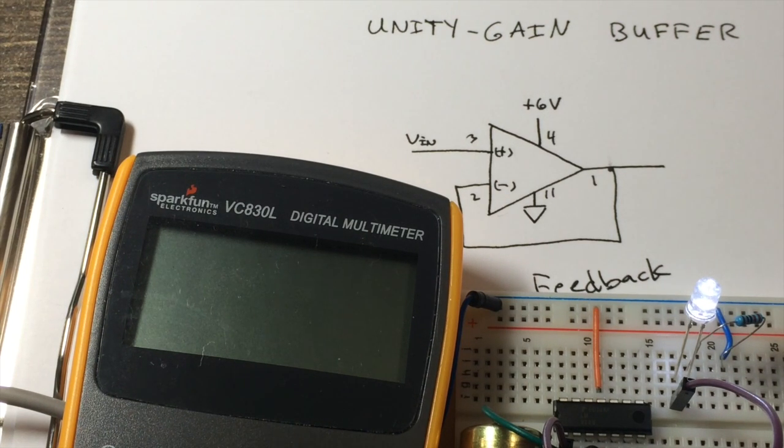So why would we use this if we get no gain? Well, the answer is there's more going on here than what we're talking about in terms of what an op-amp can do. This is acting as a buffer, meaning it is separating our input signal from our output signal, and we want to do that for a variety of reasons, particularly with the small signals we're getting with the strain gauge.